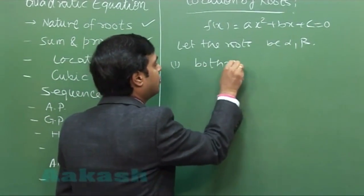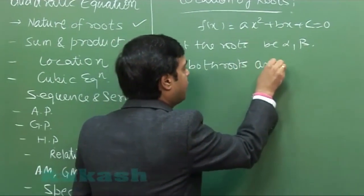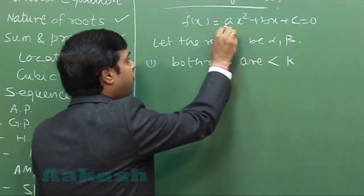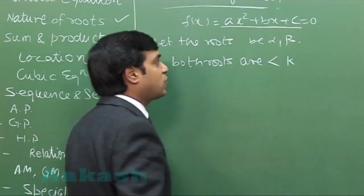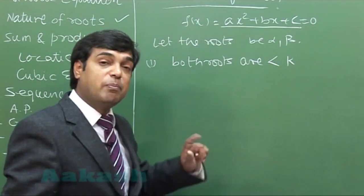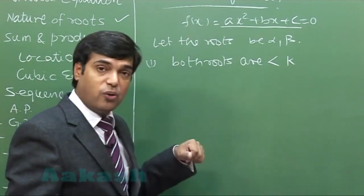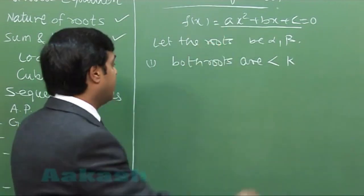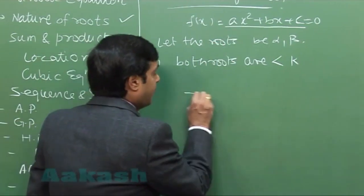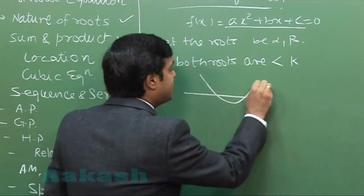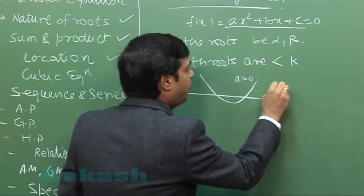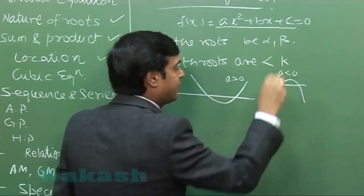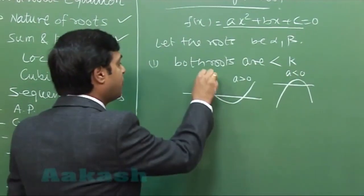Say both roots are less than a number k. When we talk about the quadratic ax² + bx + c, it may open upwards or downwards depending upon the value of a, whether it is positive or negative. It will open upwards if a is positive, downwards if a is negative.